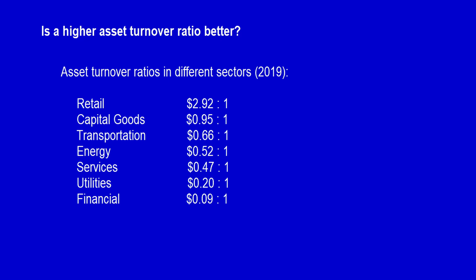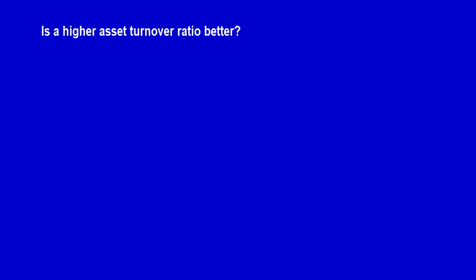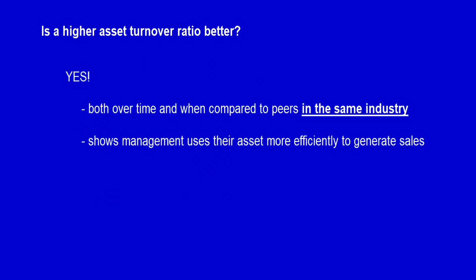Since this ratio can vary widely from one industry to the next, it must be compared to other companies in the same industry. Comparing the asset turnover ratio of a retail company to a telecommunications company is never appropriate — comparisons are only meaningful within the same sector. A higher ratio within the same industry indicates the company is using assets more efficiently to generate revenue than peers, while a low ratio indicates weakness in asset management.